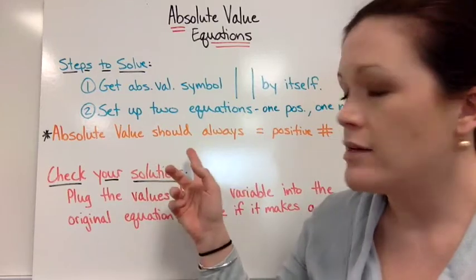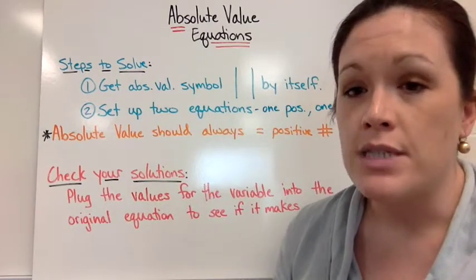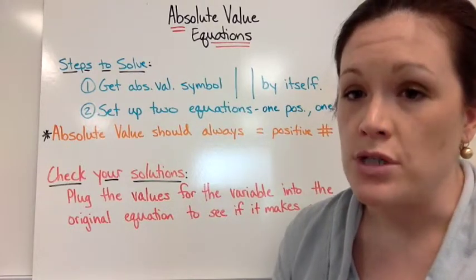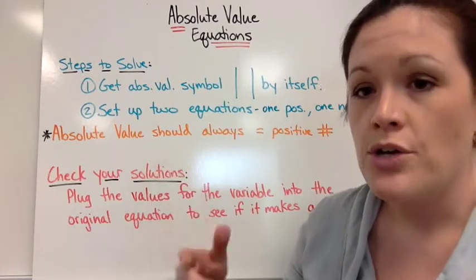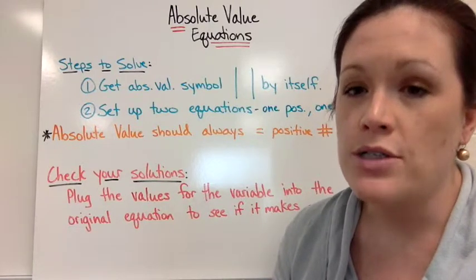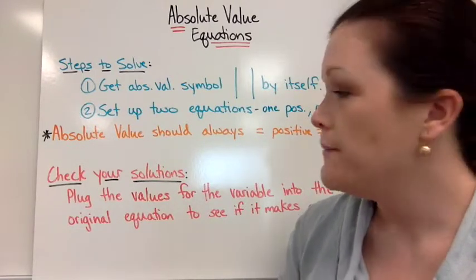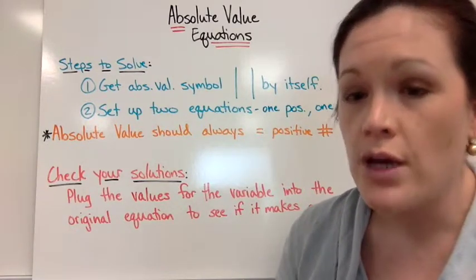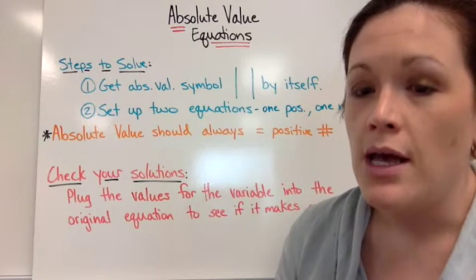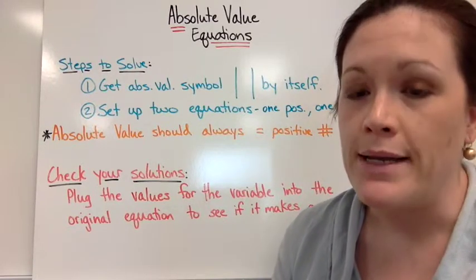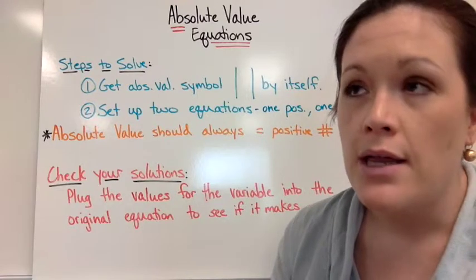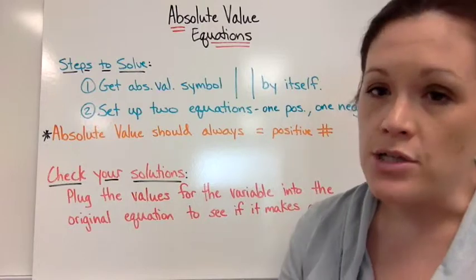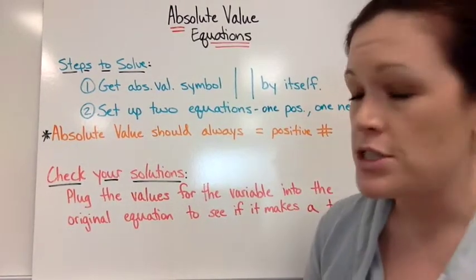So before you do all that work, keep that valuable little tip in mind and you would save yourself a lot of effort. The last thing you want to do is check your solution, because if you forget this part, you're going to end up with some solutions that look correct but actually don't make sense with the original equation. To check your solutions, you plug the values for the variables into the original absolute value equation and see if it makes a true statement — like three equals three, or the absolute value of negative four equals four.